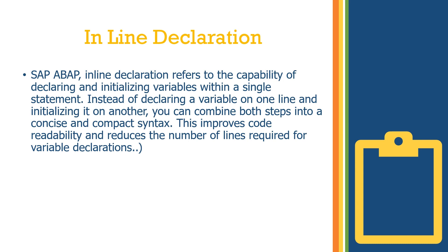Let me explain how, before SAP ABAP 7.4, we used to declare a variable. We used the DATA keyword to declare a variable, and thereafter, once the variable was declared at the top, we used to initialize the variable to a particular value. So you had to write two lines to initialize a value to a variable, but with 7.4 and above, in a single line you can achieve both — declare the data and additionally assign a value to a variable.